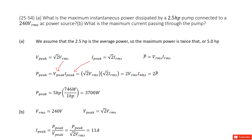Notice that V_RMS times I_RMS is just the power by definition. So we can replace it, and we get that the peak power is just 2 times the regular RMS power, which is 2.5 horsepower.